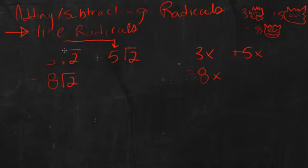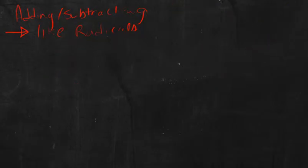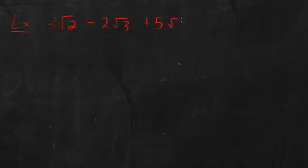So, let's go to a slightly harder example. How about something like this: 3 root 2 minus 2 root 3 plus 5 root 2 plus 6 root 3. So, I have some like and non-like radicals here. You can see, I have another root 2 and another root 2. And I have a root 3 and a root 3. So, what I have to do is I have to combine those.